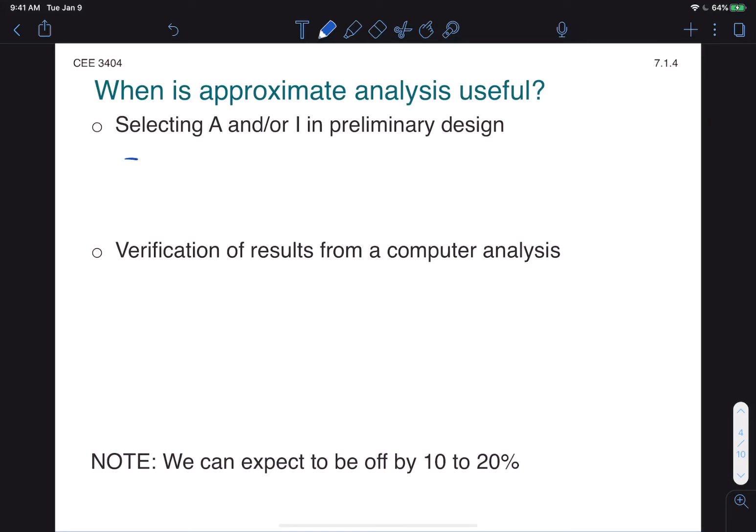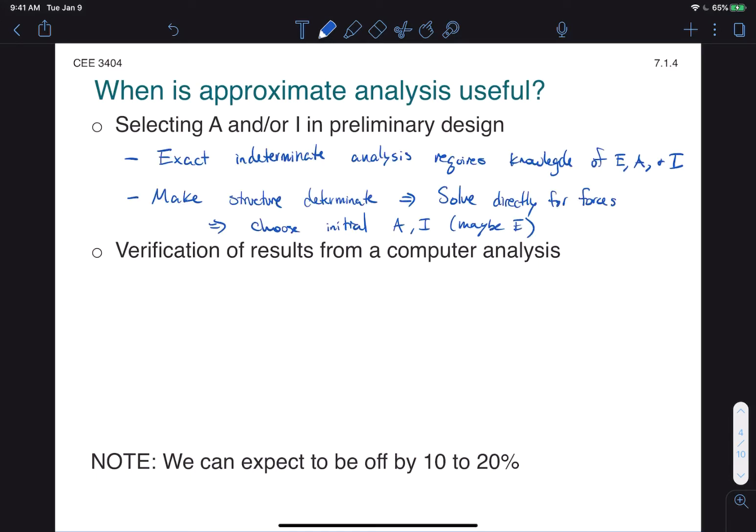By turning it into a determinate structure, we can actually eliminate the need for those values and get approximate forces for our members that then allow us to select some initial values for A and I and potentially E as well. To summarize, exact indeterminate analysis requires knowledge of geometric and material properties. But if we make the structure determinate, we can solve directly for forces and then use that information to choose those properties.